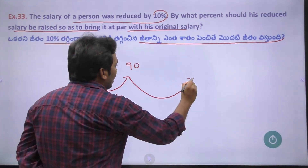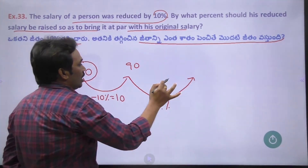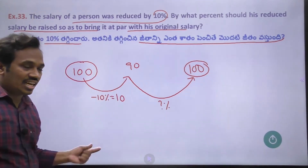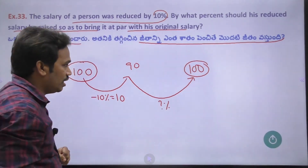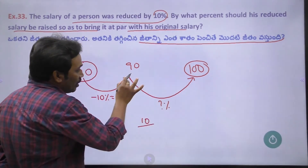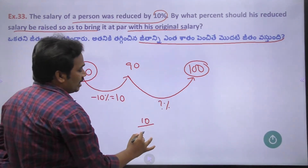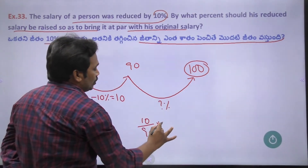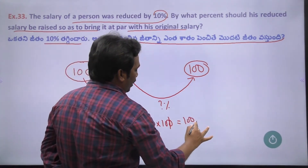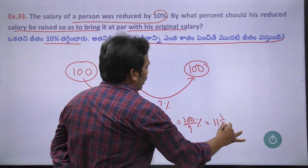Now to get from 90 back to 100, we need to find what percentage of 90 equals 10. That is 10 divided by 90, multiplied by 100, which gives 100 by 9, or 1 by 9 — which equals 11.11%.